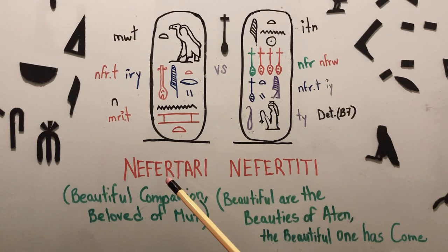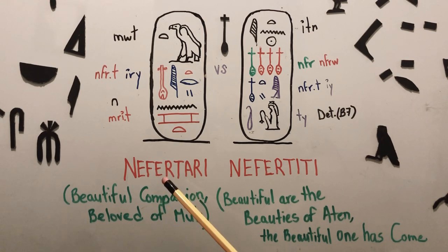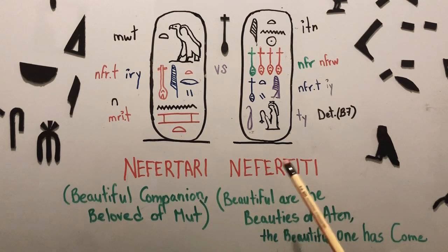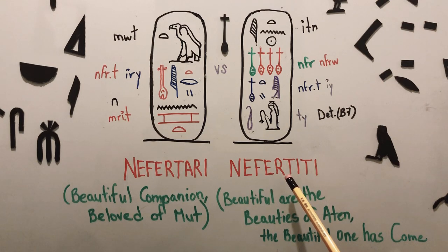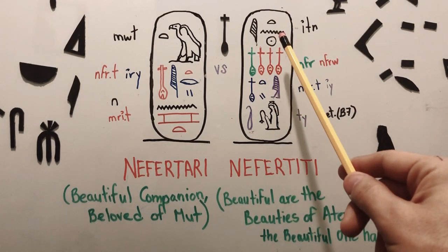Nefertari is the wife of Ramses II the Great, and you can find her name most famously at Abu Simbel down at the Aswan area. And Nefertiti is the wife of the famous Akhenaten, who is the heretic pharaoh, who tried to change the entire religion to a single god known as the Aten.